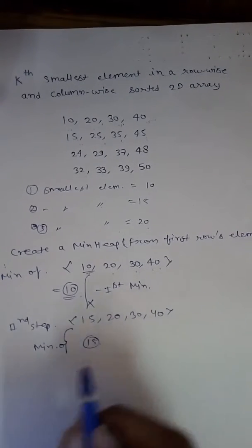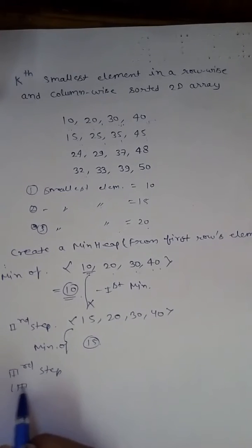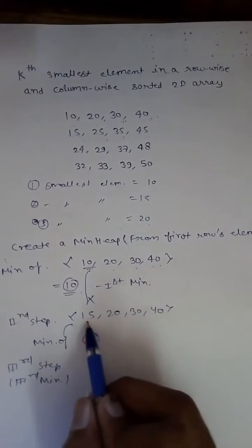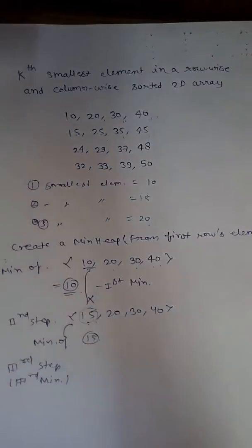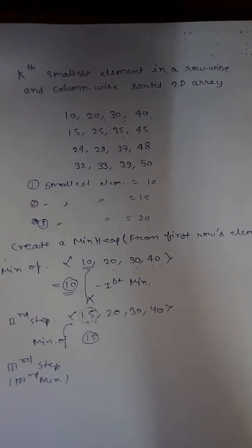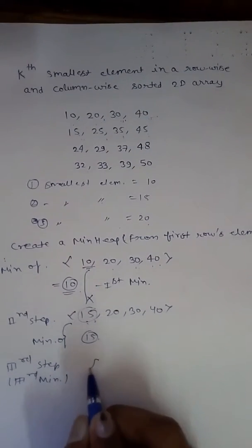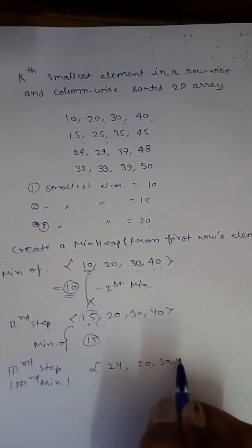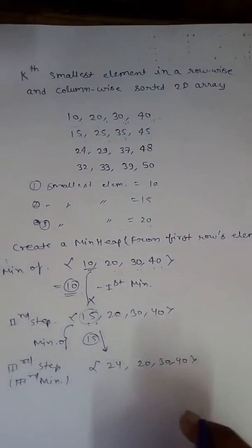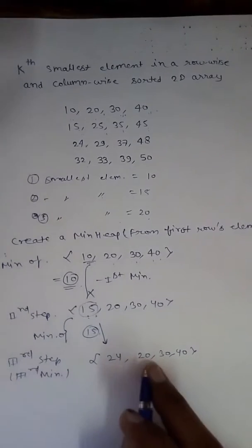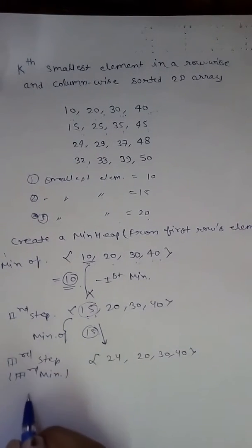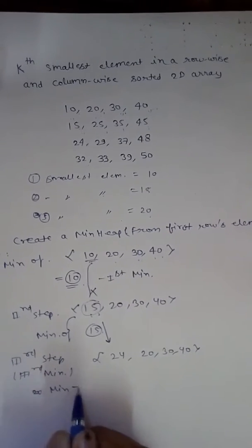For the third minimum, we insert the next minimum possible in the column of the current minimum element. Since 15 was in the first column, the next element is 24. So the heap becomes {24, 20, 30, 40}. The minimum of this is 20, so 20 is our third minimum.